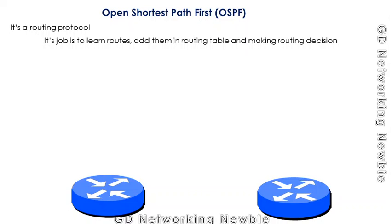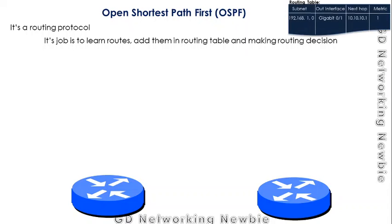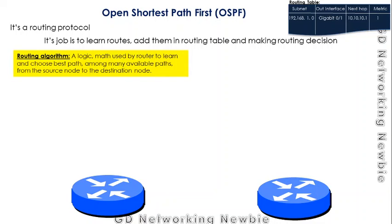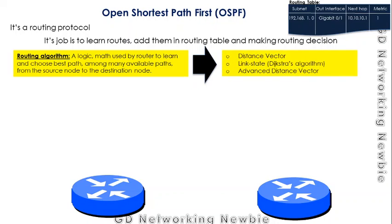Today we are going to discuss one very important topic: OSPF, the Open Shortest Path First routing protocol. Routing protocols learn routes and add them to the routing table, then make routing decisions to forward packets from source to destination. For that, they use routing algorithms, which are logic or math used by the router to learn and choose the best path. There are many routing algorithms, for example distance vector, link state, and advanced distance vector.